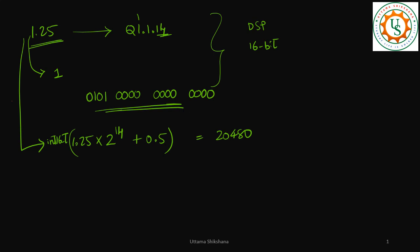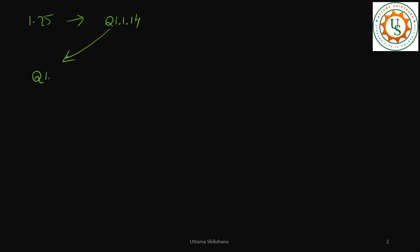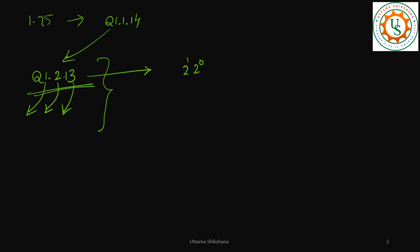Now the question is: can I represent 1.25 in a different Q format? I was at Q1.1.14 — what about Q1.2.13? Can I represent 1.25 with this format? Here the integer will be 2 bits, sign is 1 bit, and the fractional part is 13 bits. When we are going to represent in a different Q format, we need to first understand what range it can support. Since the integer is 2 bits, it will be 2 to the power of 0 plus 2 to the power of 1.